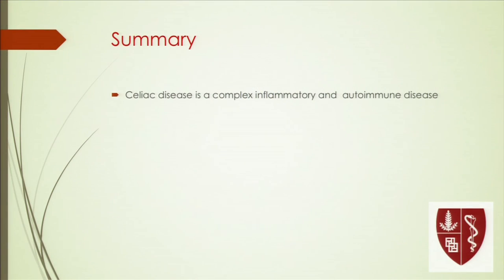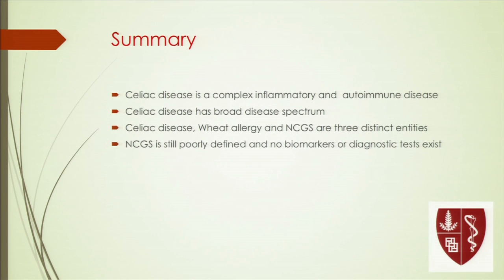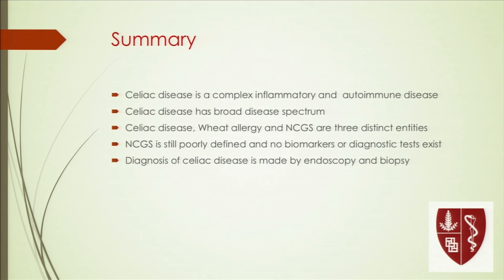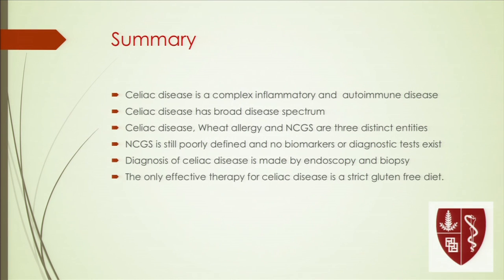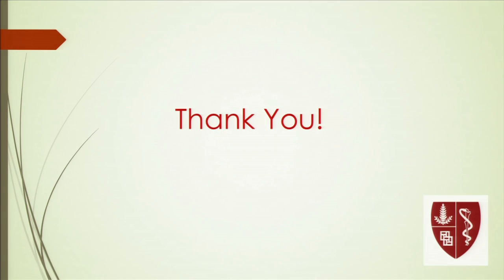In summary: celiac disease is a complex inflammatory and autoimmune disease with a very broad disease spectrum. Celiac disease, wheat allergy, and non-celiac gluten sensitivity are distinct entities. Diagnosis still relies on endoscopy and blood tests. The only currently effective therapy is a strict gluten-free diet, but adjunctive non-dietary therapies are on the horizon. Thank you, and I'm happy to answer questions.